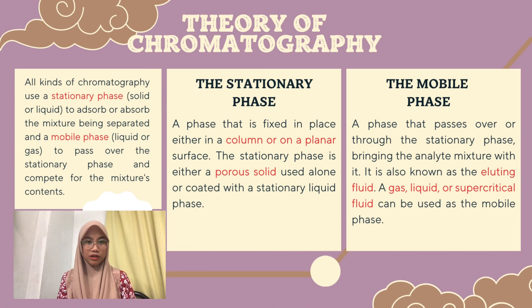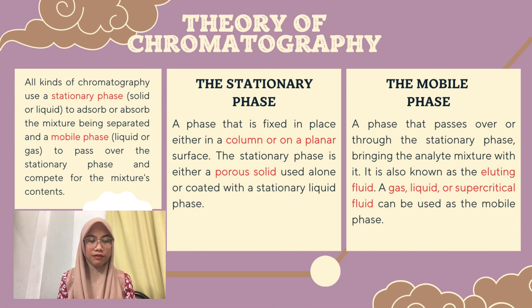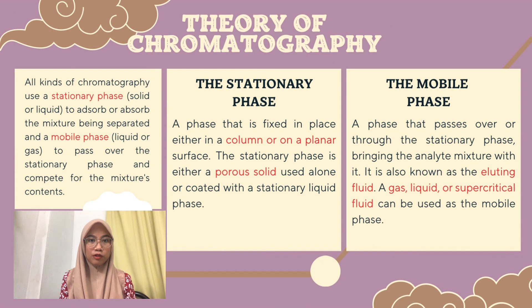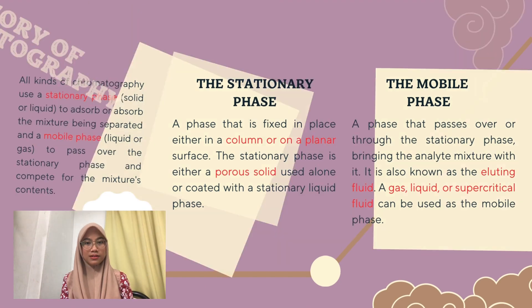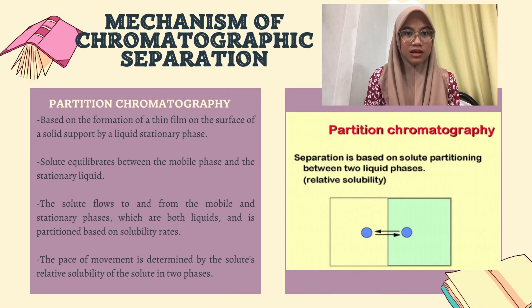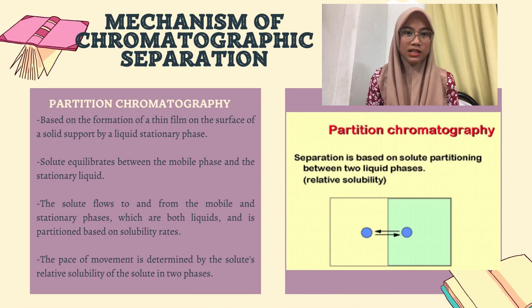The mobile phase is a phase that passes over or through the stationary phase, bringing the analyte mixture with it. It is also known as the eluting fluid. A gas, liquid, or supercritical fluid can be used as the mobile phase. There are two mechanisms of chromatographic separation: partition chromatography and adsorption chromatography.